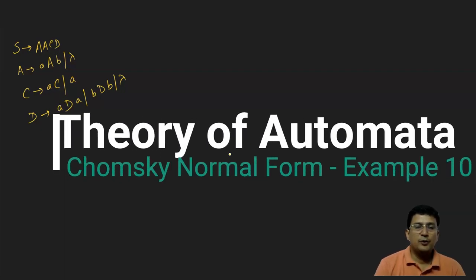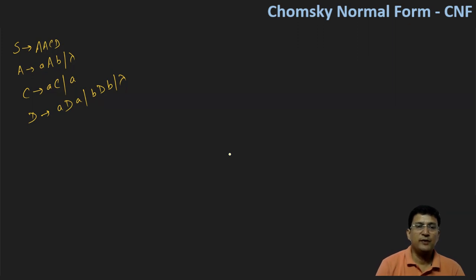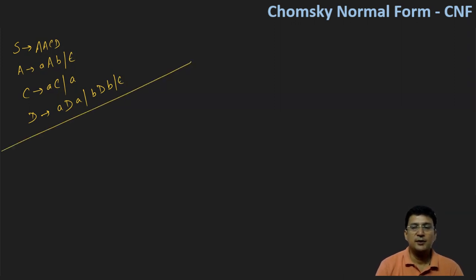Hello everyone. We will take one more example and try to convert this to CNF. So this is a CFG, and in this CFG we see that it is not a simplified CFG, because it has a null production — this lambda also means null production. So now we follow the familiar steps: first remove epsilon/lambda productions, then simplify, and then convert to CNF.